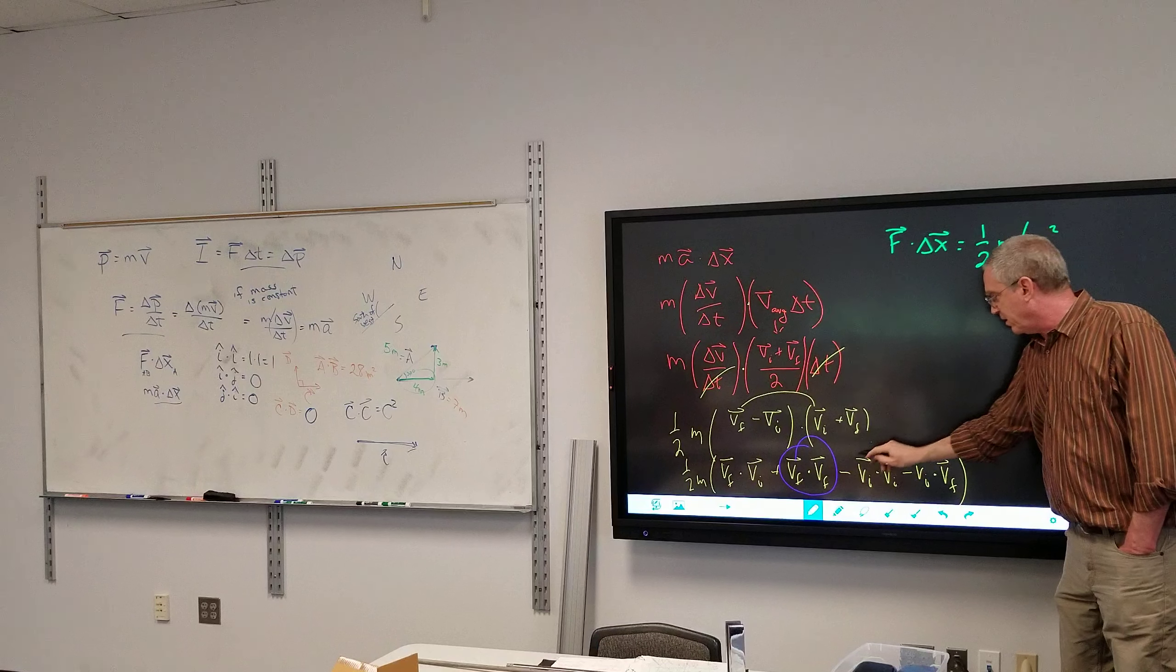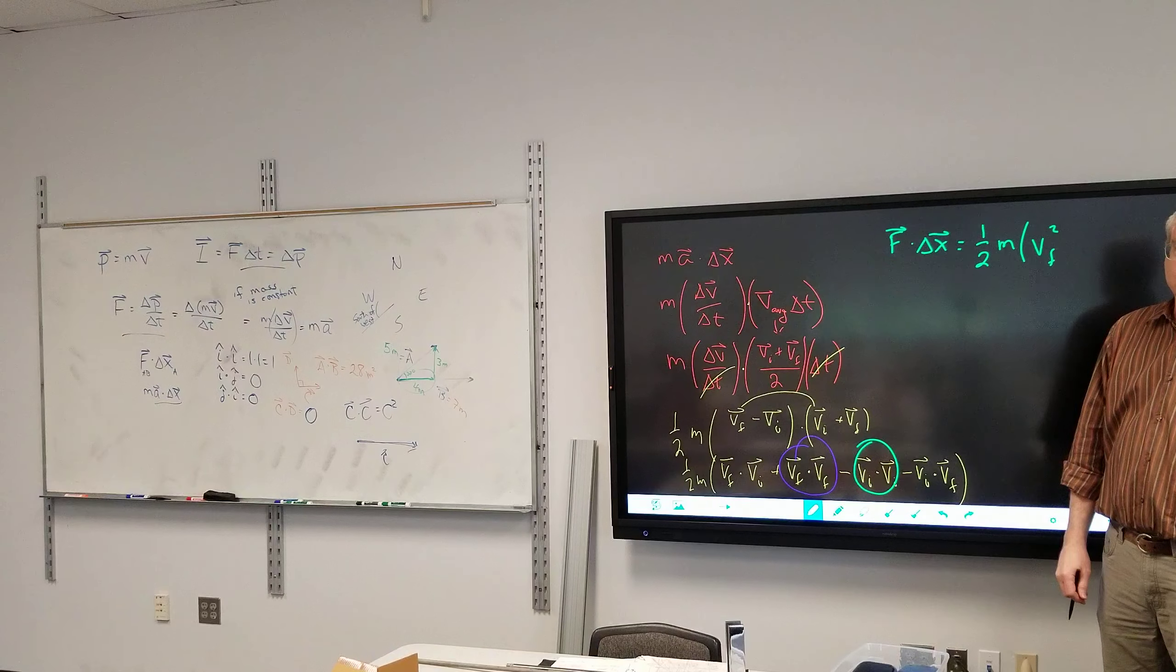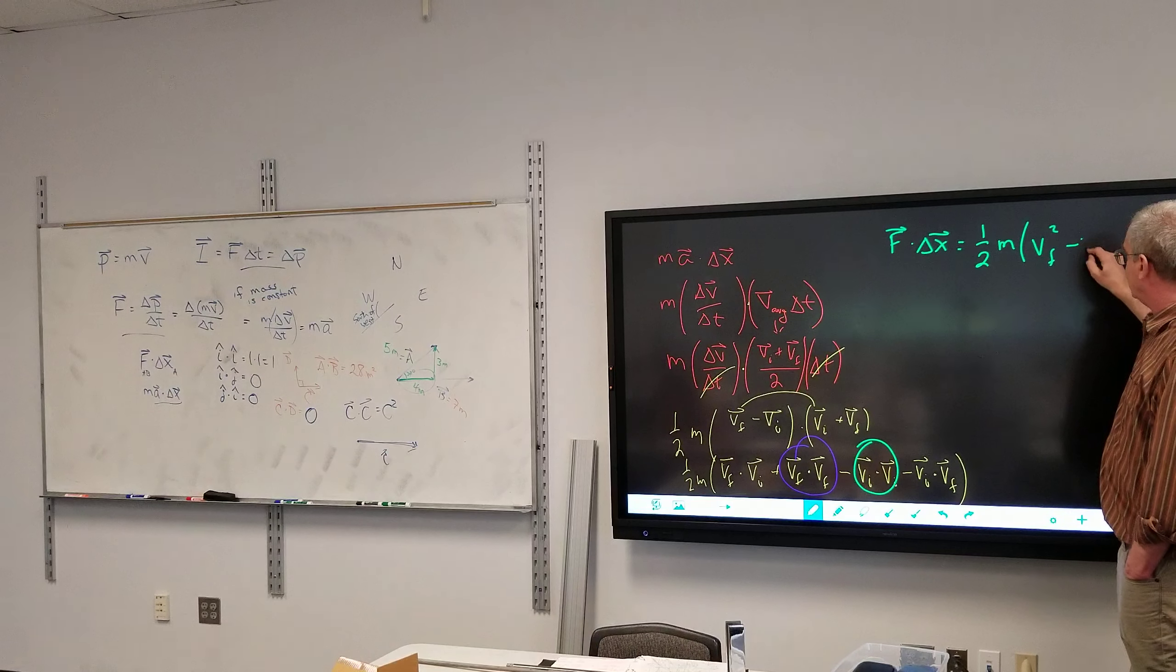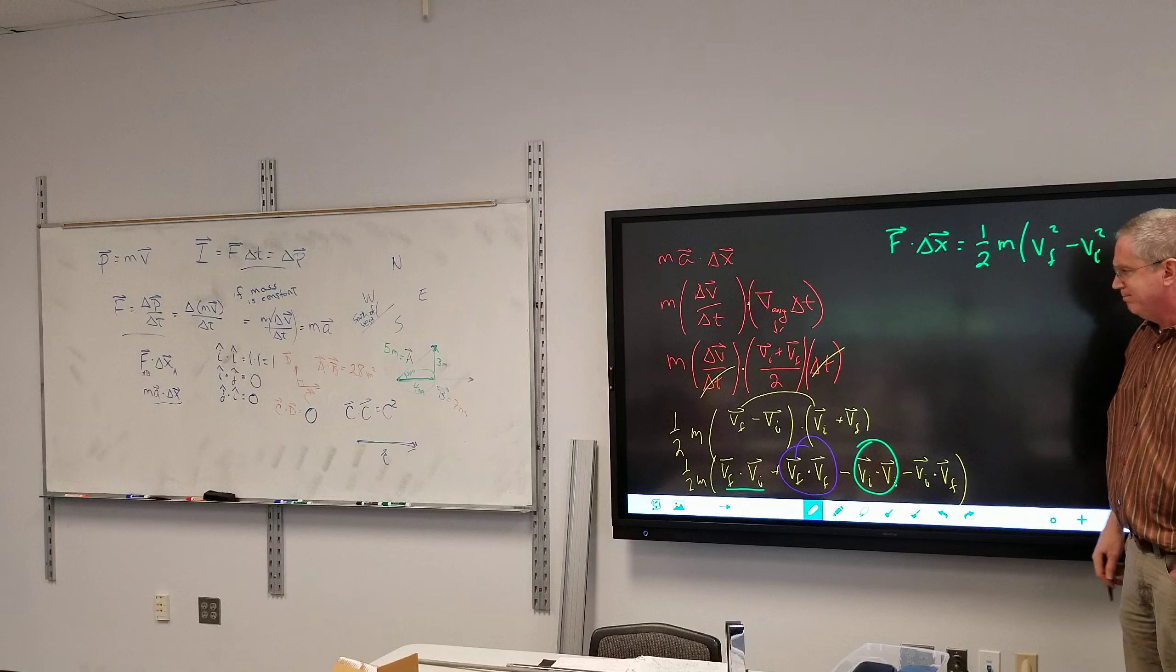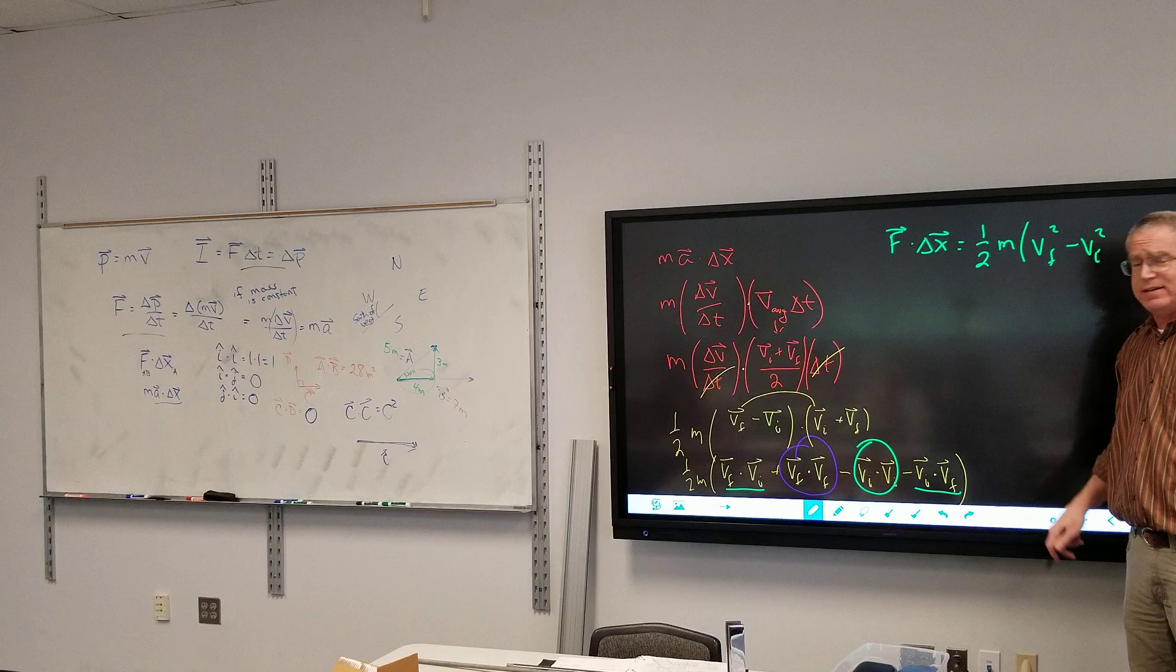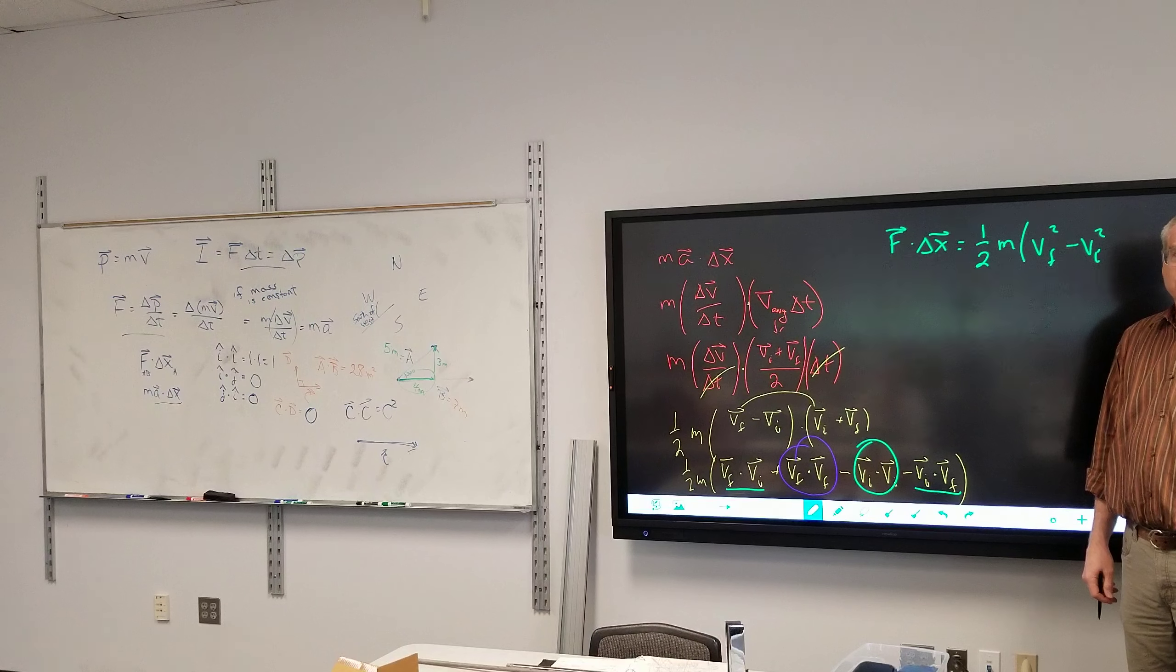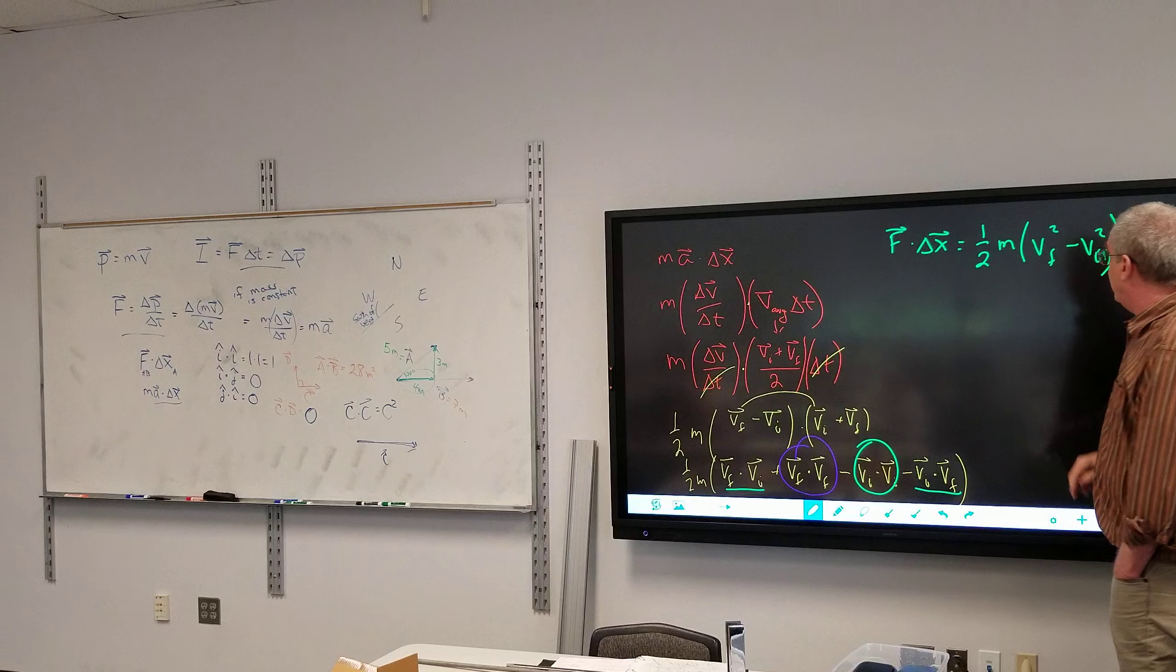What about VI dot VI? Minus VI squared. What about I have VF dot VI there, so multiply those two, and I have VI minus VI dot VF. They cancel out.